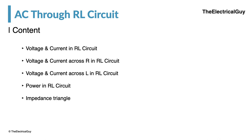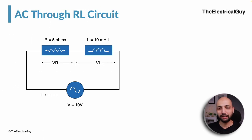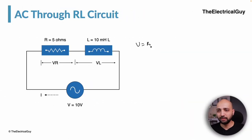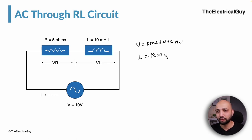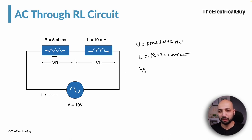Let us start with voltage and current in the RL circuit. Here we have a simple RL circuit — an AC supply connected to a resistor and inductor. V is the RMS value of the applied voltage, which is 10 volts. I is the RMS current flowing through the circuit — the total circuit current, not related to just the resistor or inductor. There will be a voltage drop across the resistor labeled VR, which is simply the IR drop across the resistance.